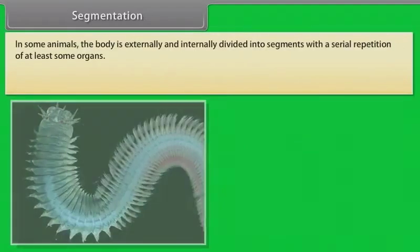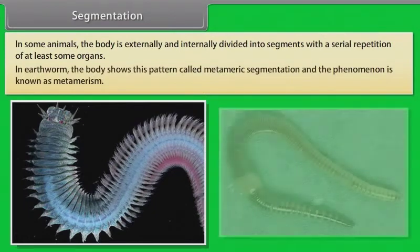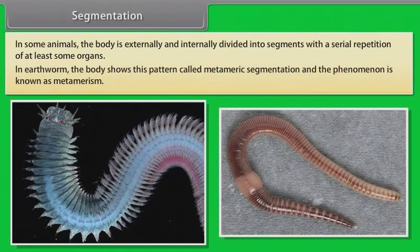In some animals, the body is externally and internally divided into segments with a serial repetition of at least some organs. In earthworm, the body shows this pattern called metameric segmentation, and the phenomenon is known as metamerism.